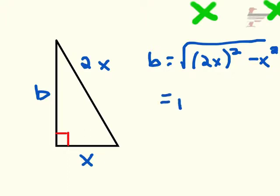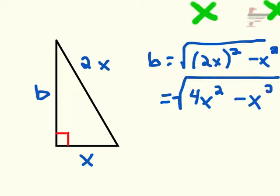Because 2x is in parentheses, we have to apply the square to each of the 2 and the x, giving us 4x². We still have minus x² on the outside.